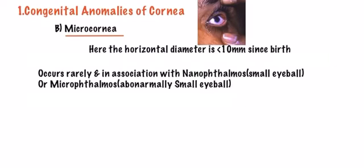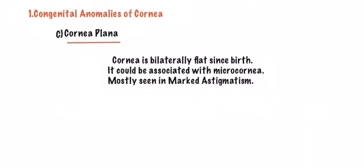Microcornea is not very common; it occurs only rarely and in association with two conditions: nanophthalmos or microphthalmos. Nanophthalmos is a condition where there is a small eyeball, and microphthalmos is where the eyeball is abnormally very small. Whenever there is a small eyeball, the cornea is also correspondingly small.